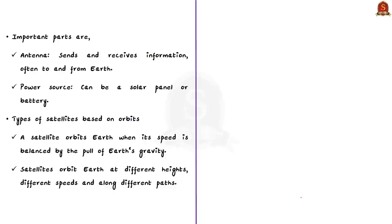But most satellites have at least two parts in common: an antenna and a power source. The antenna sends and receives information from and to Earth. So if I want to change the alignment of a satellite, I can do it from Earth by sending a signal. Similarly, data collected by the satellite can be sent to Earth through this antenna. The second part is the power source, which can be a solar panel or a battery.